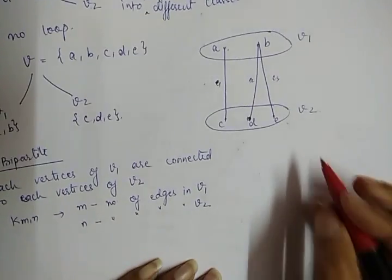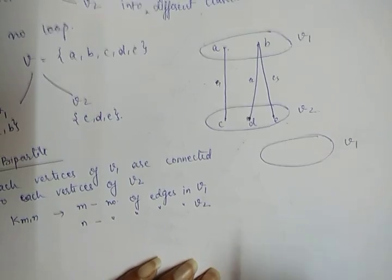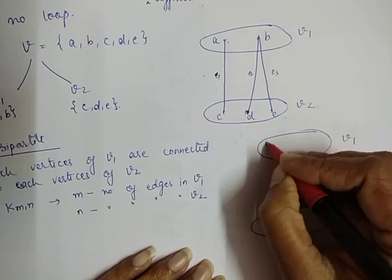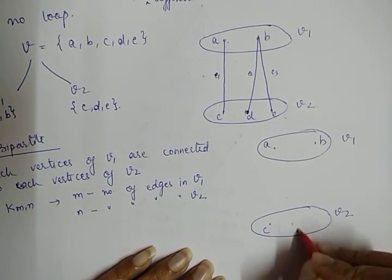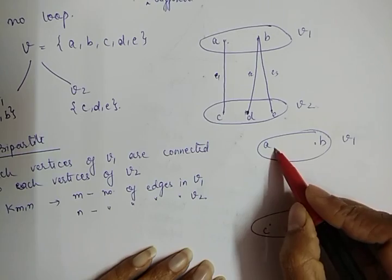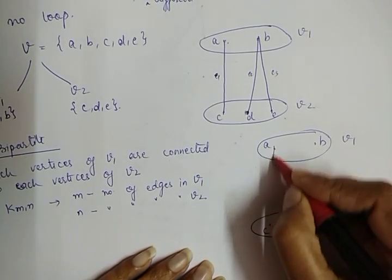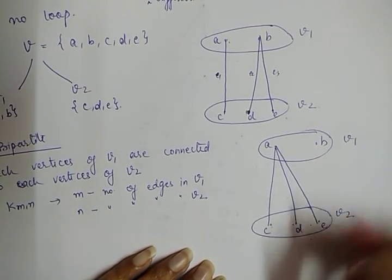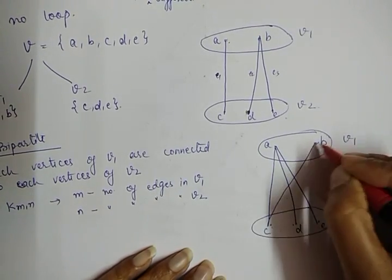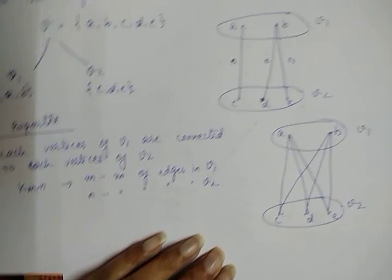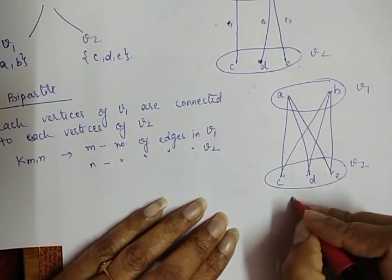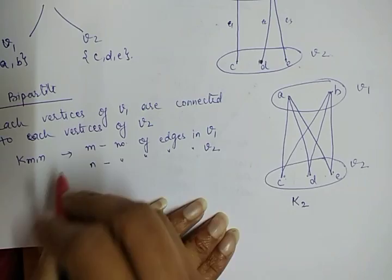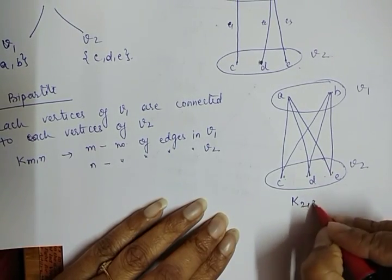For this complete bipartite example, I create class V1 and class V2. V1 has vertices A and B, and V2 has vertices C, D, and E. Every vertex of V1 is connected to every vertex of V2 — so A is connected to C, A is connected to D, A is connected to E, and B is connected to C, D, and E. So in this case, the representation is K(m,n) — M is the number of vertices in V1, which is 2, and N is the number of vertices in V2, which is 3 — giving us K(2,3). This is your Complete Bipartite Graph. Thank you so much.